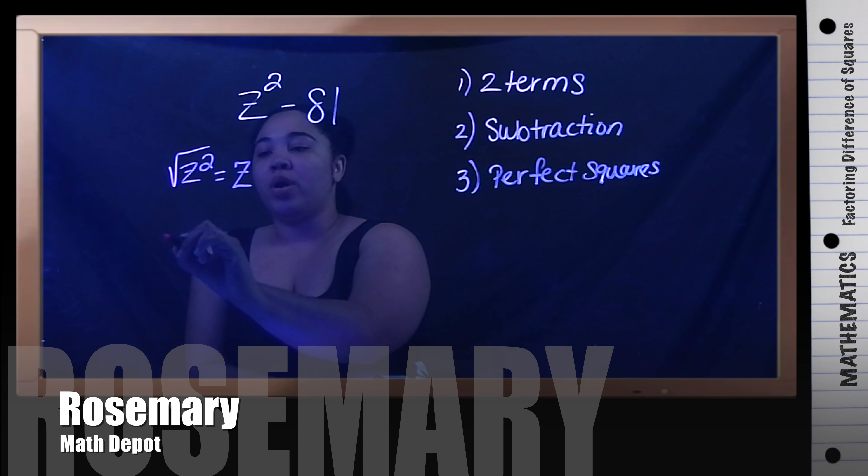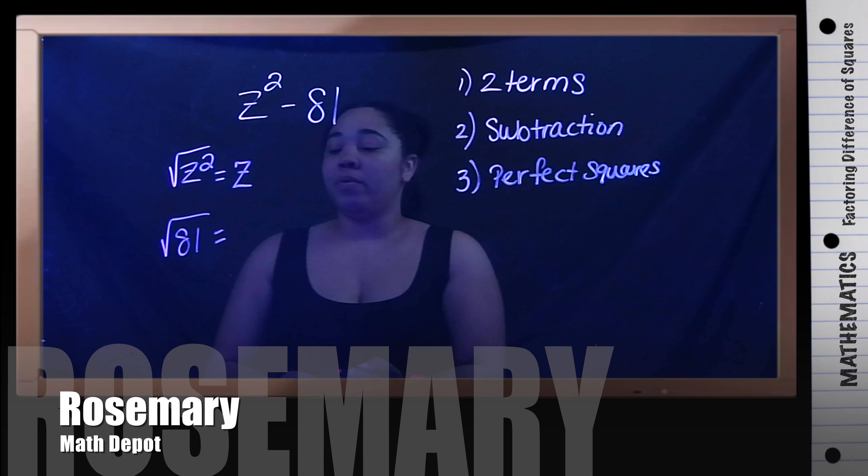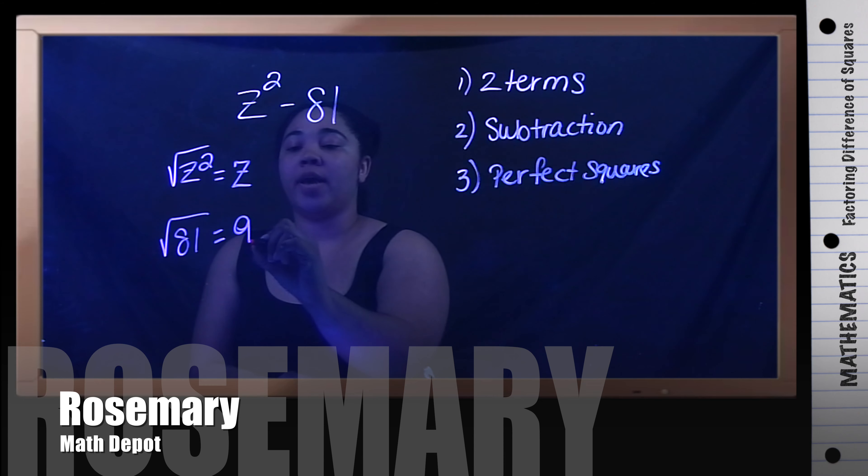Then I want to take the square root of 81. And for the square root of 81, you actually get 9.